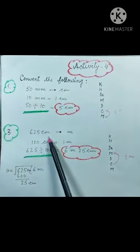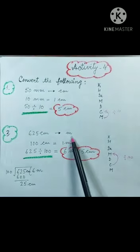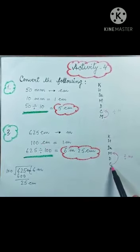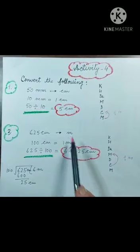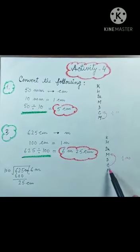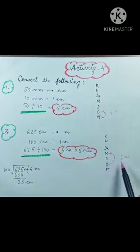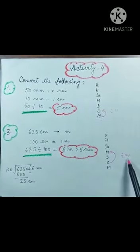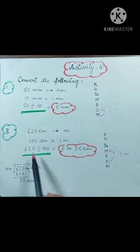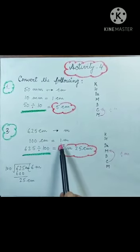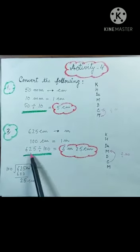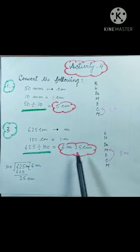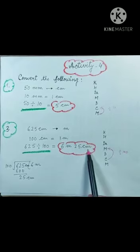625 centimeters — convert to meters. Centimeters are given, going to meter — smaller to bigger, divide. Two steps taken, so divide by 100. One hundred centimeters equals one meter. 625 divided by 100 equals 6 meters and 25 centimeters.